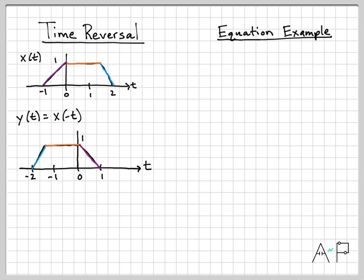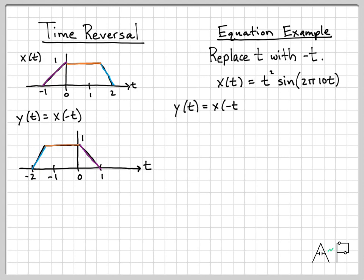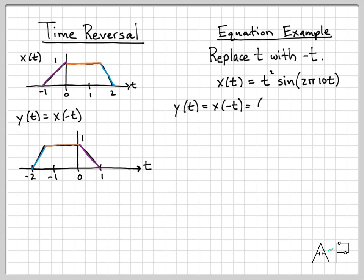What about when you have just an algebraic equation? For example, say we have the signal x of t equals t squared times sine of 2π·10t. If somebody says to time reverse that signal, we know that means replacing all the t's with minus t. So I create the time reversed signal y of t by replacing every t I see — there's one in t squared and one in the argument of sine — replacing each with negative t. I like putting parentheses as a placeholder and then inserting the minus t.